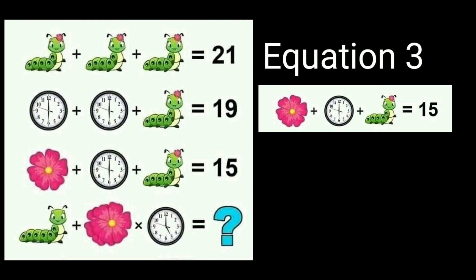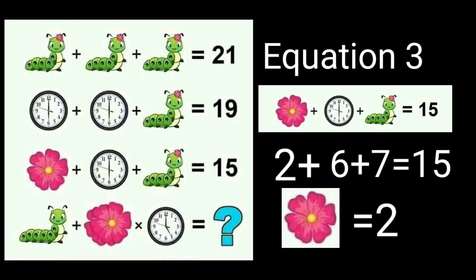Now, equation 3. The value of caterpillar is equal to 7 and the value of clock is equal to 6. So the value of flower is equal to 2. So 2 plus 6 plus 7 equals 15. The value of flower is 2.